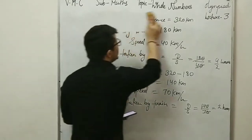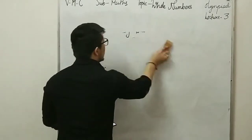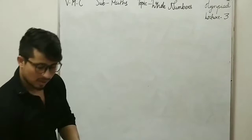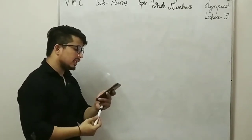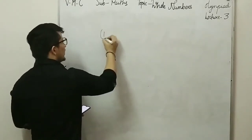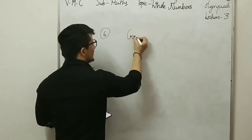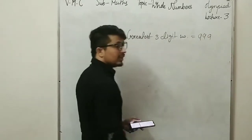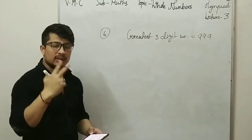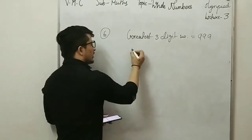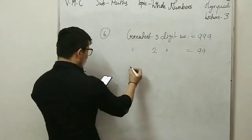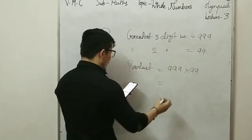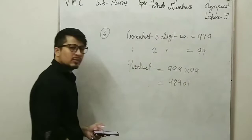Next, question number 6: find the product of the greatest 3-digit number and the greatest 2-digit number. The greatest 3-digit number is 999, and the greatest 2-digit number is 99. Product equals 999 multiplied by 99, and the answer is 98,901.